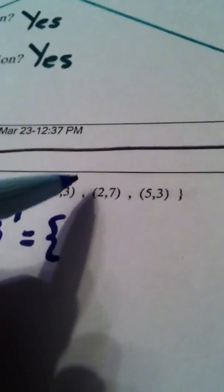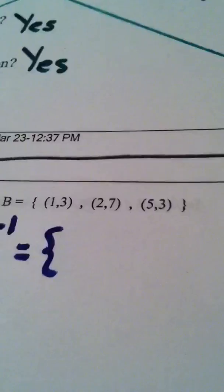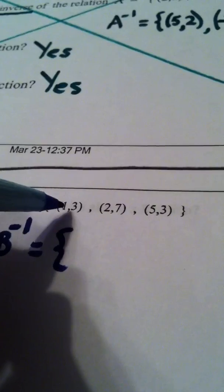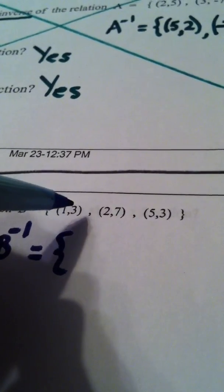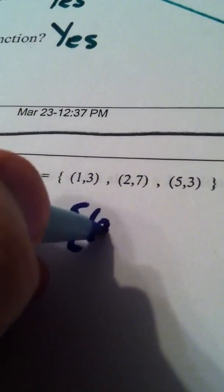The way you find an inverse of an original relation is you simply switch the domain and the range. Another way to say that: what used to be input is now output, and vice versa. So instead of the ordered pair 1,3, I would have the ordered pair 3,1. Instead of the ordered pair 2,7, I would have the ordered pair 7,2. And instead of the ordered pair 5,3, I would now have the ordered pair 3,5.